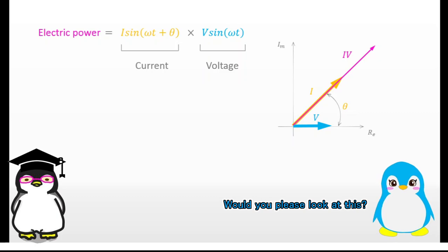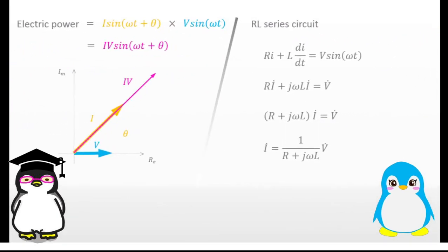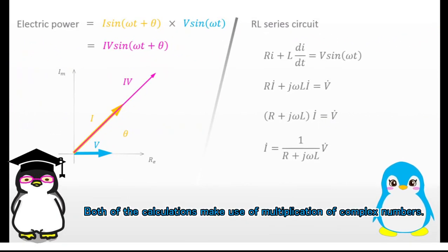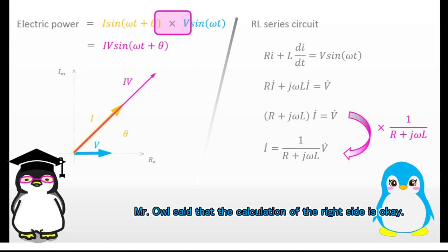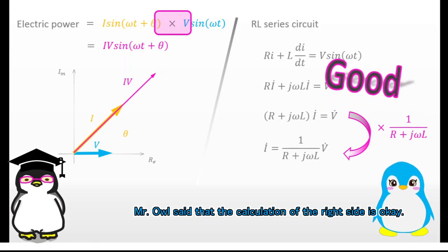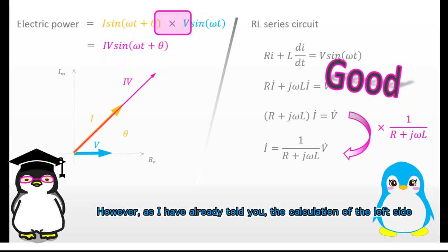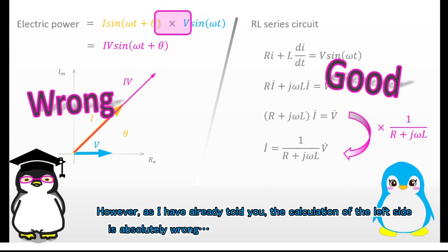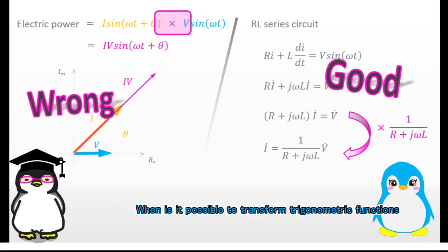Would you please look at this? Both of the calculations make use of multiplication of complex numbers. Mr. Owl said that the calculation on the right side is okay. However, as I have already told you, the calculation on the left side is absolutely wrong. When is it possible to transform trigonometric functions into complex numbers?